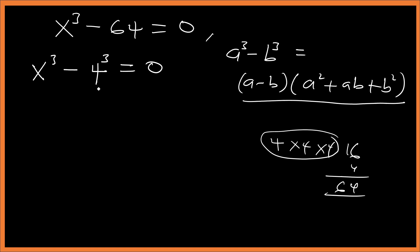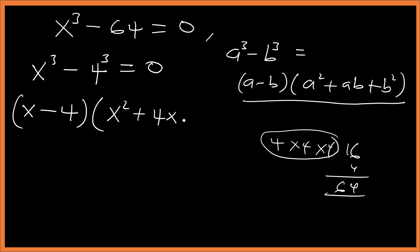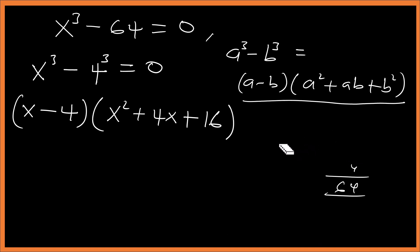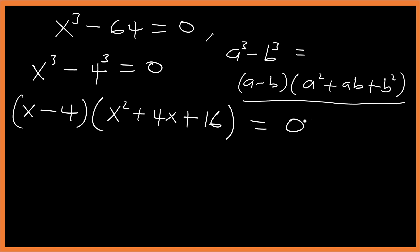Applying the difference of cubes formula with a equals x and b equals 4, we get (x minus 4) times (x squared plus 4x plus 16) equals zero.